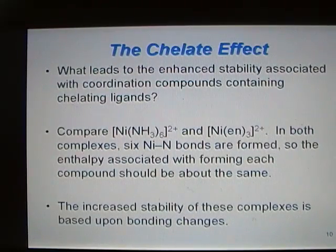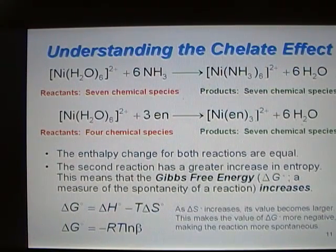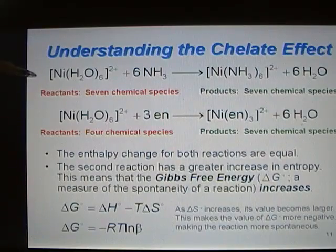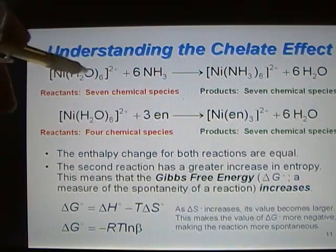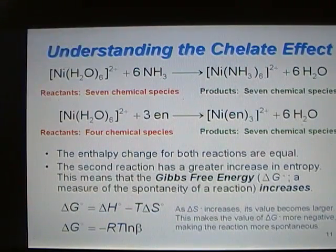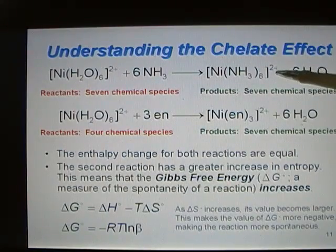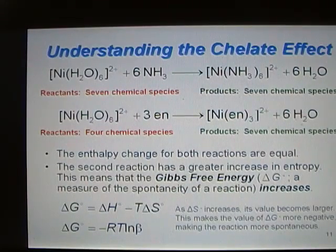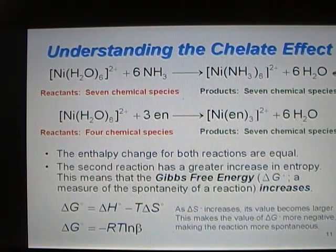The increased stability of these complexes can be based upon the idea of bonding changes — specifically, entropy. In the first reaction, on the reactant side, you have seven chemical species: one Ni(H₂O)₆²⁺ and six NH₃s. After the reaction occurs where NH₃ replaces H₂O, you have Ni(NH₃)₆²⁺ and six waters. The products also have seven chemical species, so the entropy did not change much during this reaction.